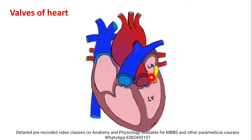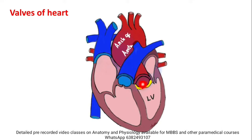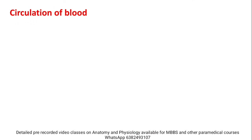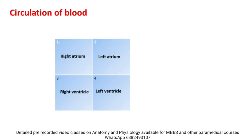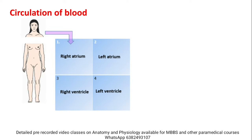Deoxygenated blood from the upper part of the body enters the right atrium via the superior vena cava. Deoxygenated blood from the lower part of the body enters the right atrium via the inferior vena cava. So the entire body's deoxygenated blood is collected in the right atrium.